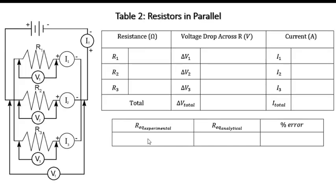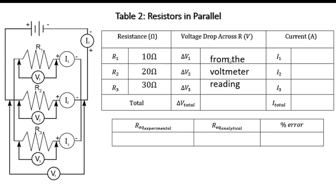Part 2 is resistors in parallel. We will have 3 resistors — R1, R2, and R3 — connected in parallel, with values of 10 ohms, 20 ohms, and 30 ohms. Out of the experiment, you must be able to read the voltage drop for each resistor — V1, V2, and V3 — and the total voltage drop, obtained from the voltmeter reading. The currents I1, I2, I3, and the total current will be obtained from the ammeter reading.